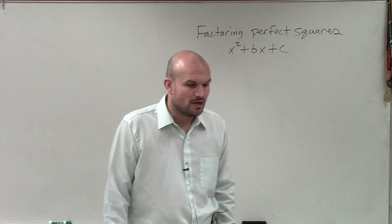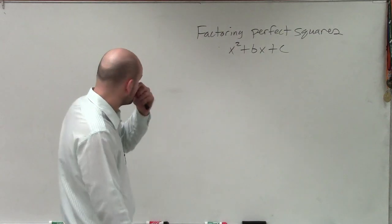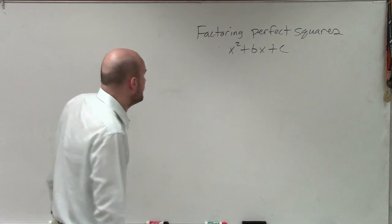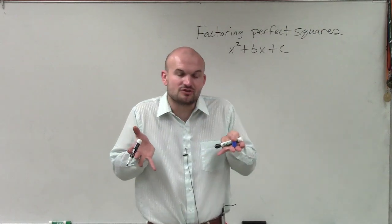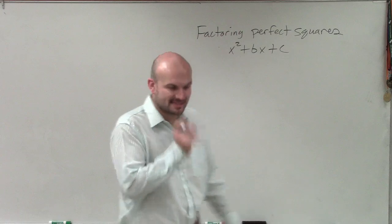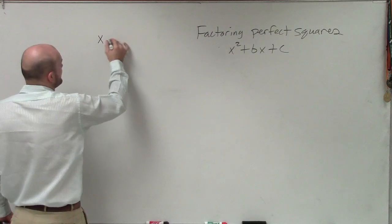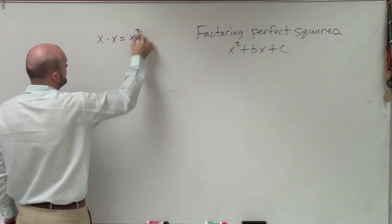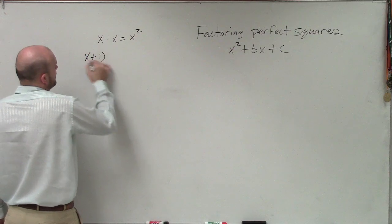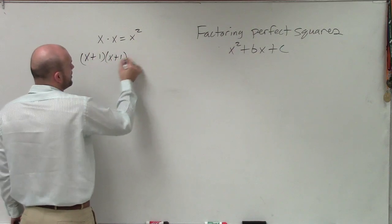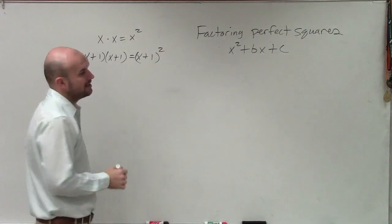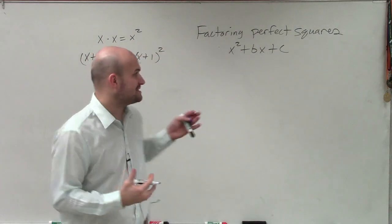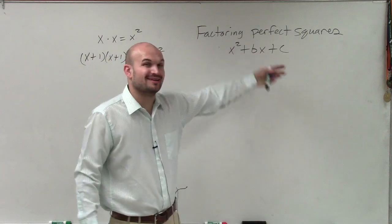Now, when we're dealing with a perfect square, what that basically is telling us is we're telling us it's going to be an expression multiplied by itself. Just like when we had a term, x times x, we said that was x squared. Well, x plus 1 times x plus 1, that is x plus 1 squared. And when you multiply out by that self, a lot of times you're going to have a perfect square in this format.